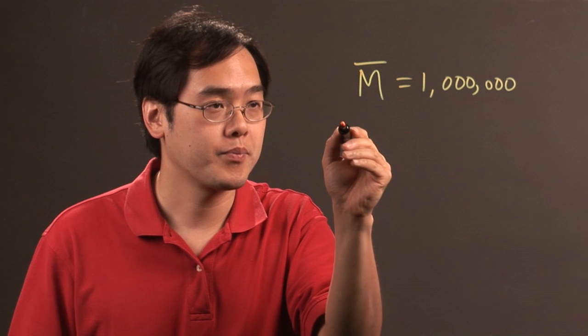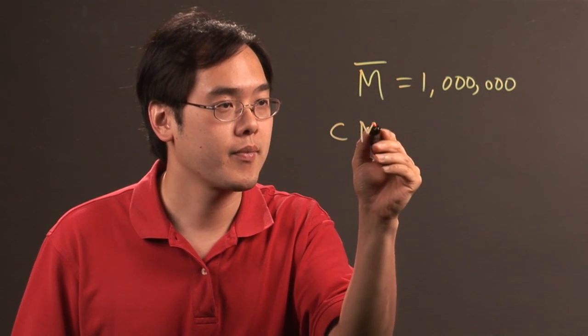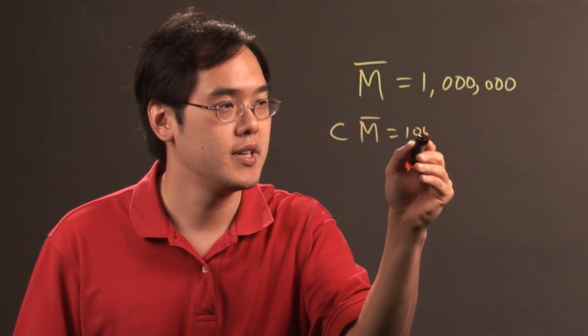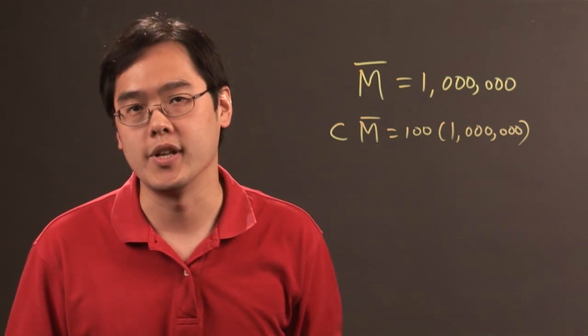So if you have let's just say the letter C and you want to multiply by a million, it's like C times M bar which is like saying 100 times one million which as you know is going to be 100 million.